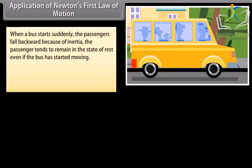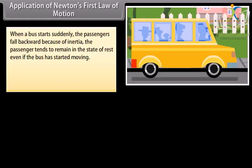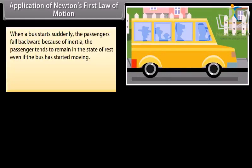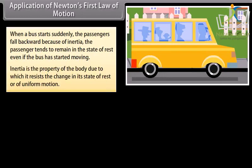When a bus starts suddenly, the passengers fall backward because of inertia. The passenger tends to remain in the state of rest even if the bus has started moving. Inertia is the property of the body due to which it resists the change in its state of rest or of uniform motion.